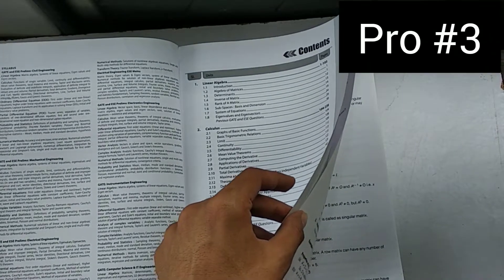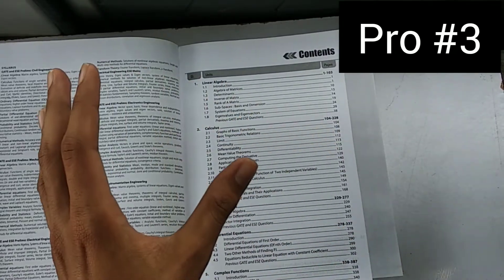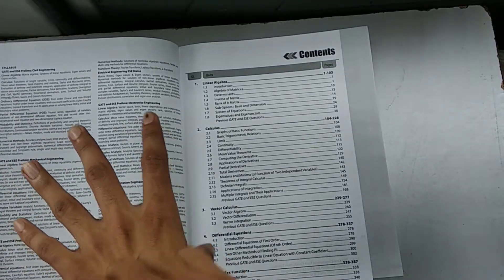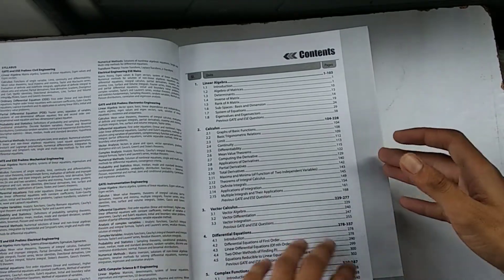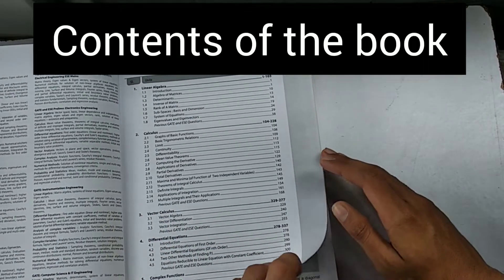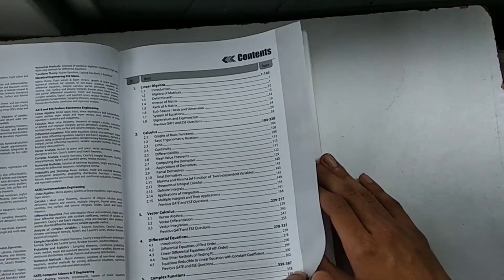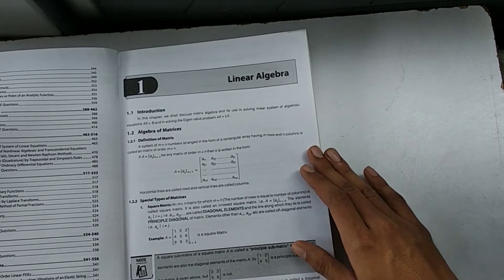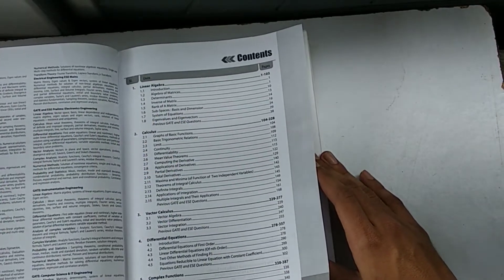This book is not just helpful for GATE but also for ESC. If you want to buy a book to practice questions for Engineering Mathematics, then you should buy this book. Otherwise, I don't think this book is required for your preparation - it's just to solve examples, solve questions, and get more practice. Here are the contents: Linear Algebra, Calculus, Vector Calculus, Differential Equations, Complex Functions, Probability and Statistics, Numerical Methods, Laplace Transform, Fourier Series, and Partial Differential Equations.